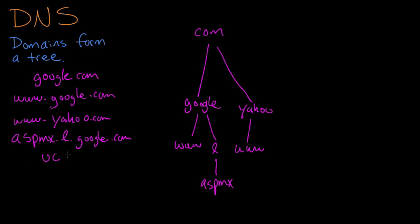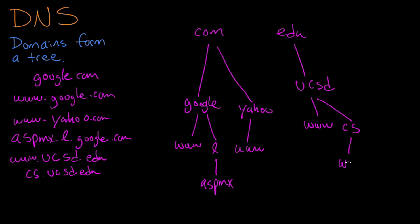That means there's an edu here and UCSD below that, and then there's www in front of that. They've got a web server. The computer science department would be cs.ucsd, so they go below that, and there's a web server in that department too. The UK has got their own domain, and then there's co below that, bbc, www.